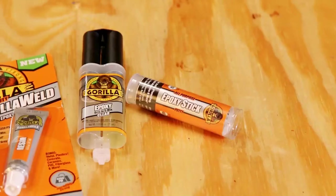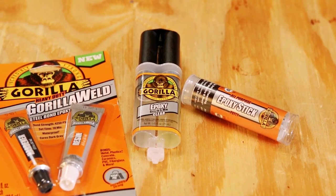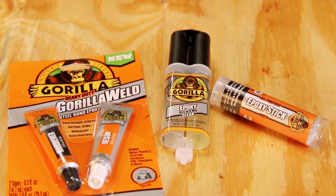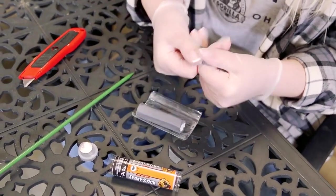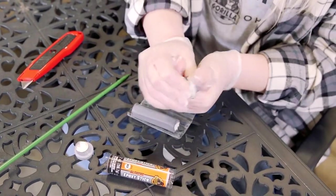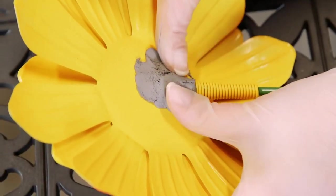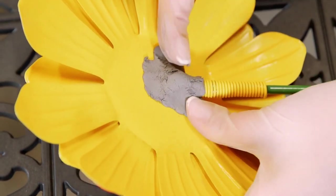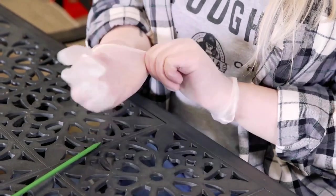Gorilla All-Purpose Epoxy Stick is an incredibly strong and versatile epoxy putty. The hand-mixable, easy-to-use epoxy sets in just 10 minutes and works on most surfaces. Gorilla All-Purpose Epoxy Stick is waterproof, non-rusting, and once cured, it can be drilled, sanded, and painted.